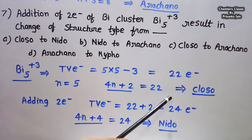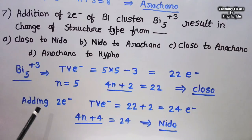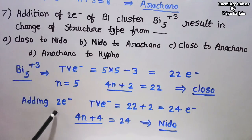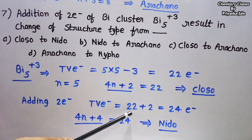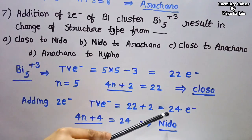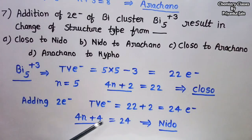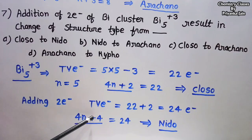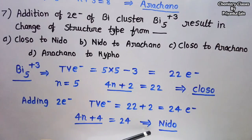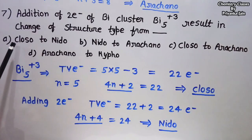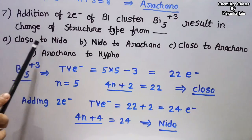Adding 2 electrons gives a total of 22 + 2 = 24 valence electrons. Since 24 = 4(5)+4, this belongs to the 4n+4 group, which is nido. The structure changes from closo to nido — option A is correct.